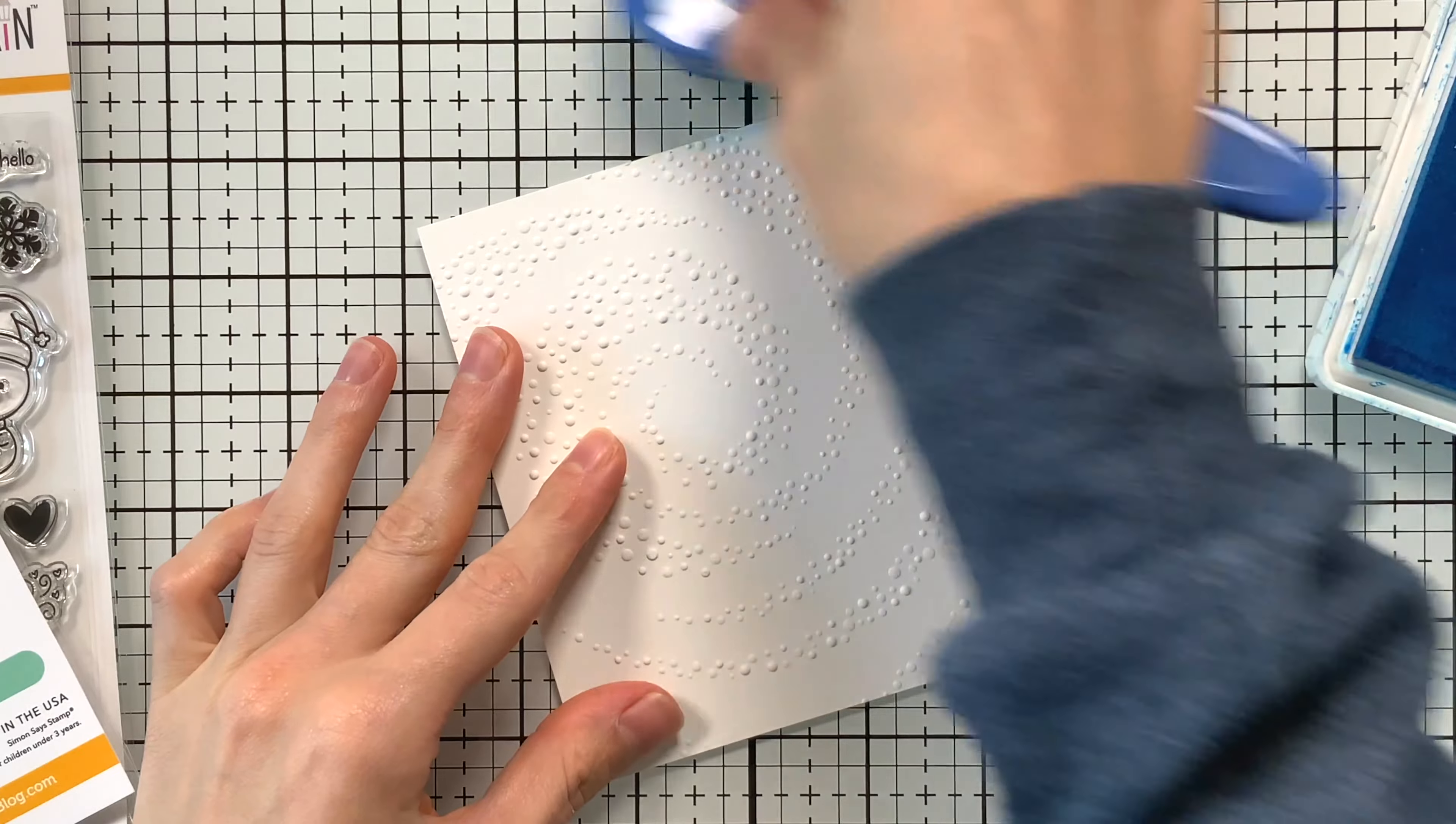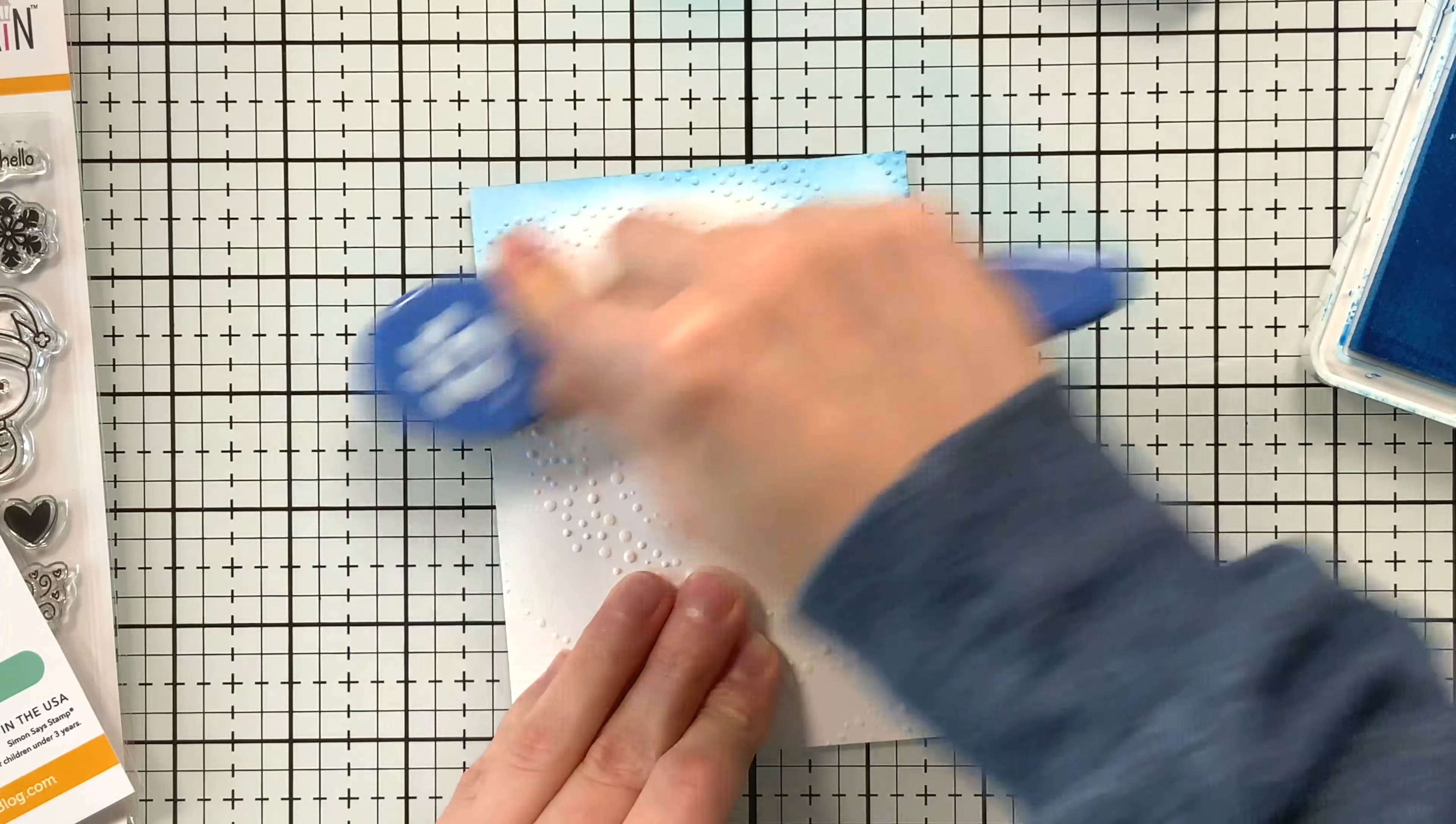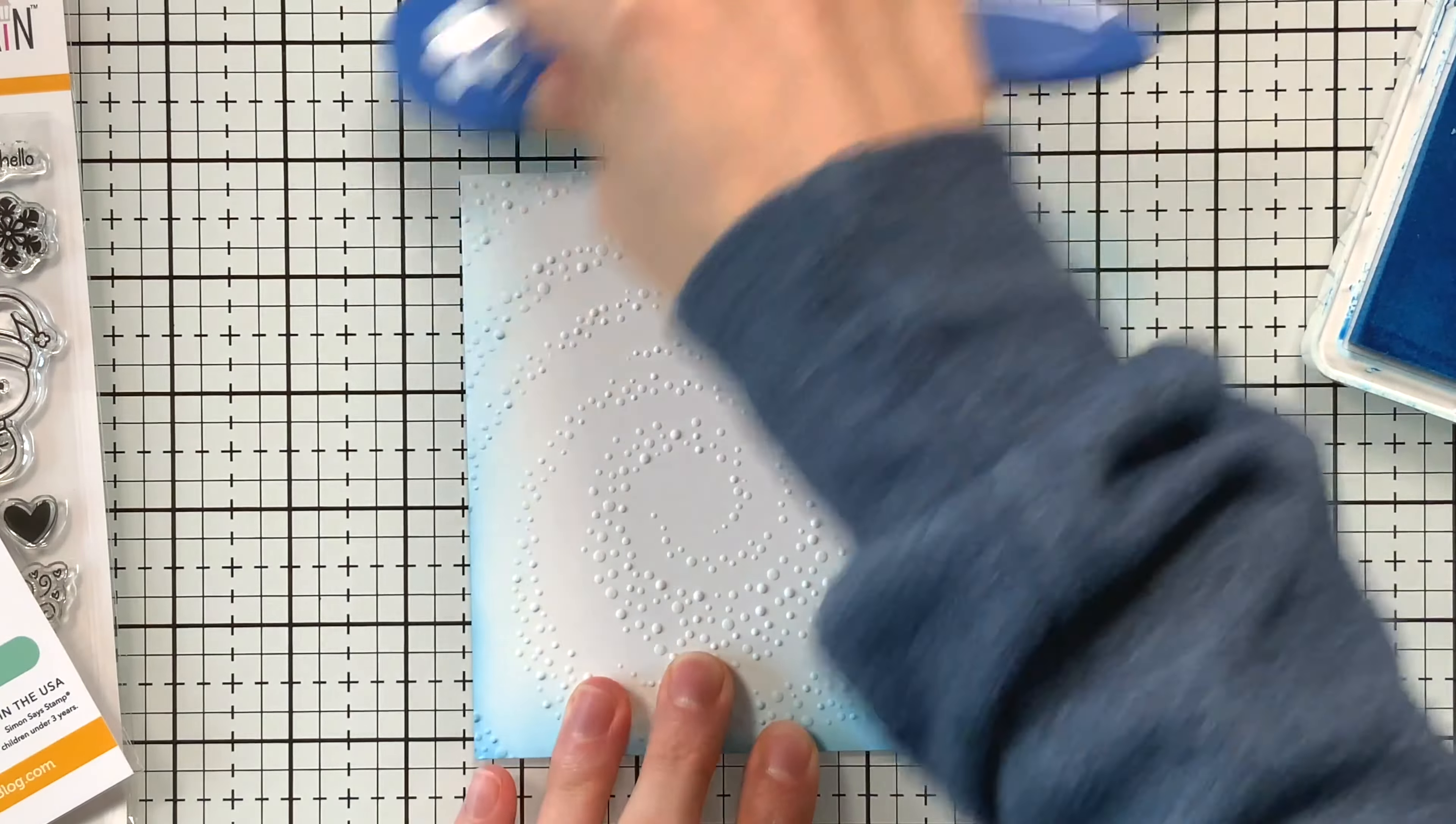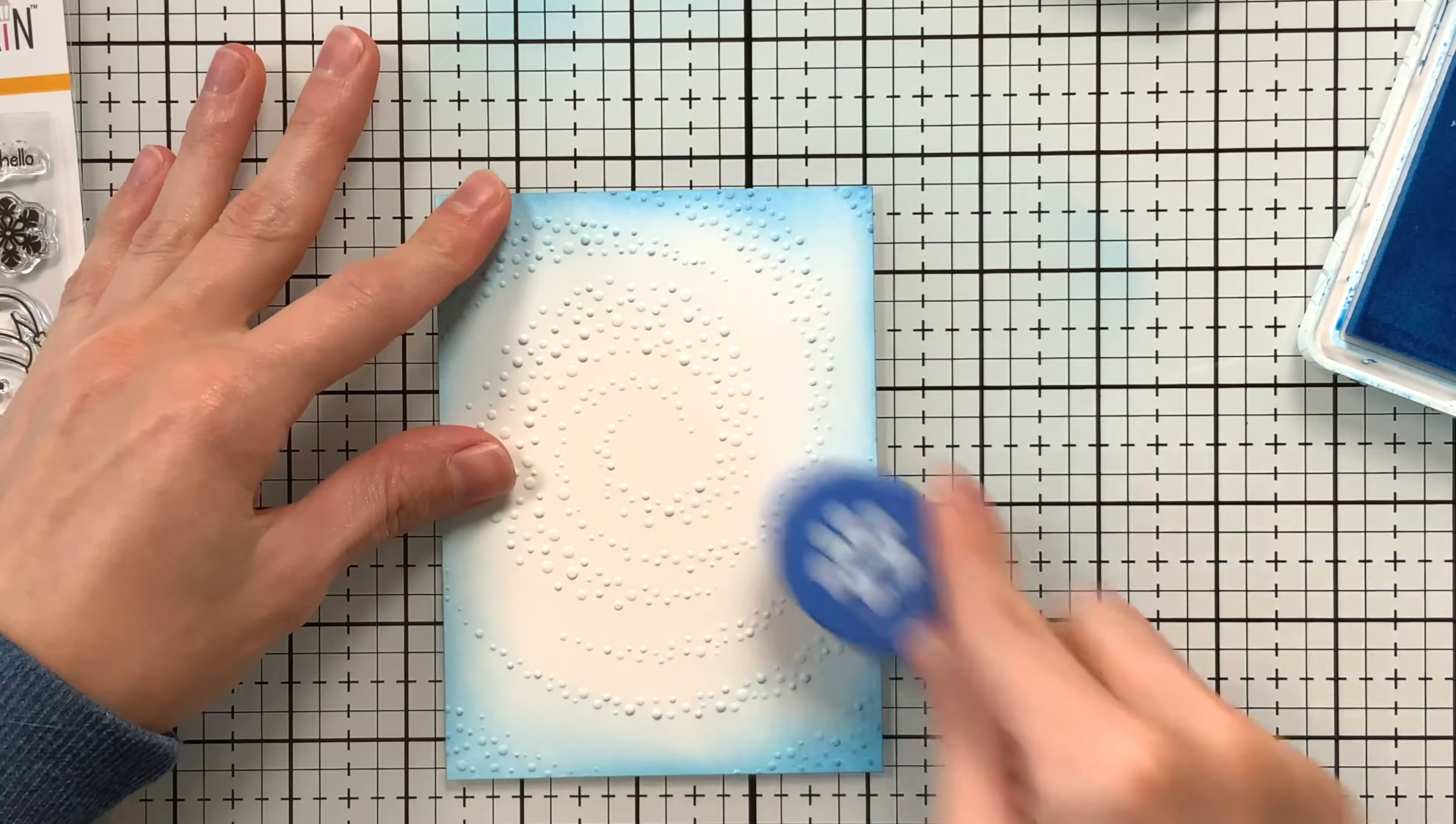I'm going to emboss this and then use the raised side of the paper to do a little bit of ink blending. I'm using cadet ink from Simon Says Stamp to ink blend around the edges of this card panel. I will actually end up trimming this card panel down a little bit so it's slightly smaller than an A2 card. Once I have that background completed, it's super simple, just enough to add a little color to the edges, and then we're just going to keep that bright white in the middle with that fun texture.